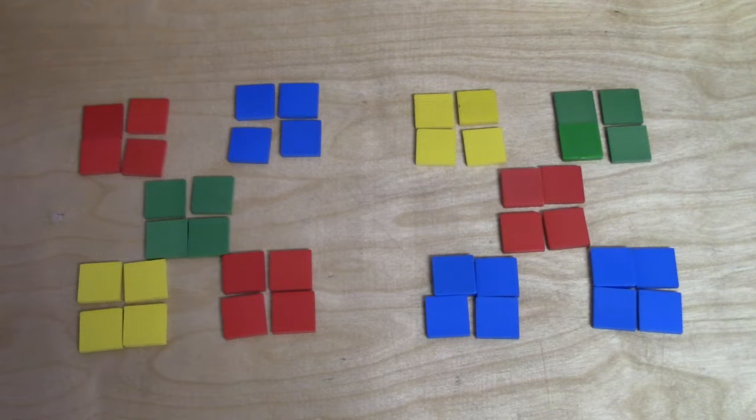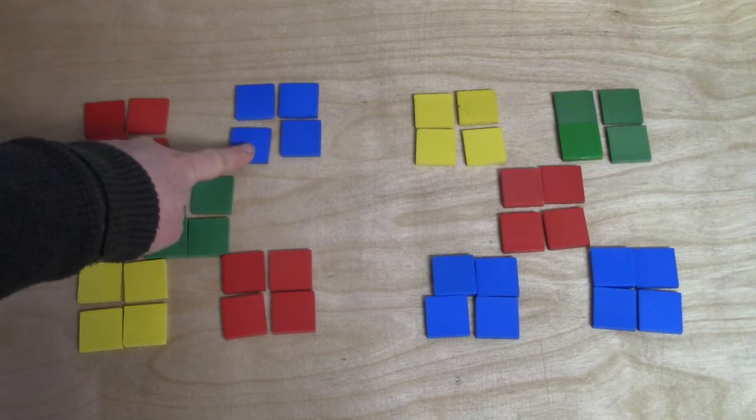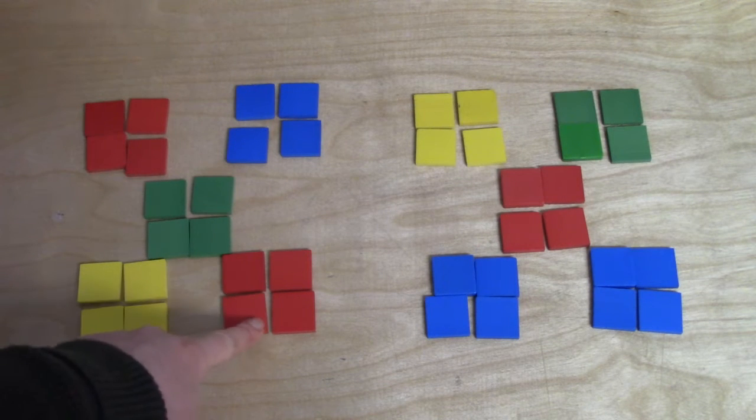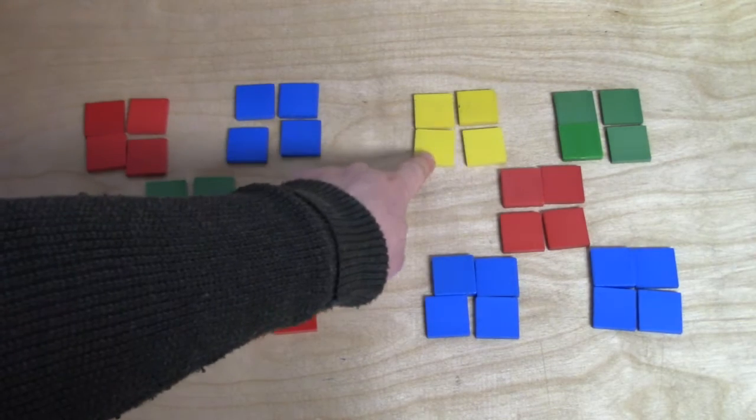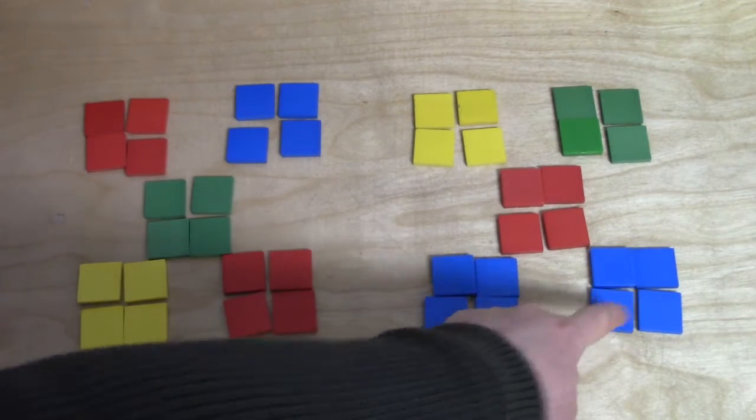We're going to count these again, but this time we're going to count each group by four. 4, 8, 12, 16, 20, 24, 28, 32, 36, 40.